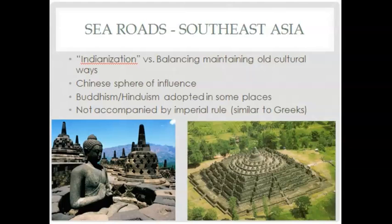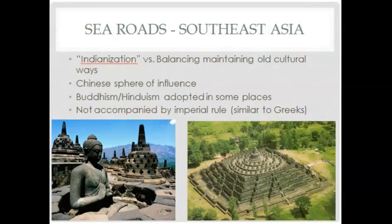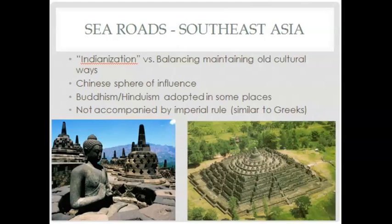In Southeast Asia, the Sea Roads had a huge impact, creating a balancing act between keeping old cultural ways versus adopting incoming influences from India and China — a process called Indianization. Buddhism and Hinduism became adopted there. Notably, Southeast Asia was never taken over imperially — no conquerors came, only the religion spread, which was good for these people. The largest Buddhist monument in the world is Borobudur, located not in India or China, but in Southeast Asia.